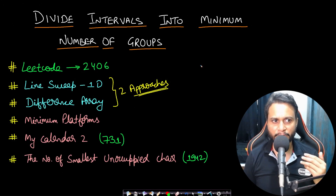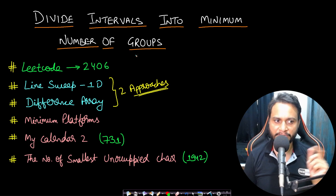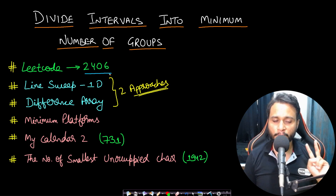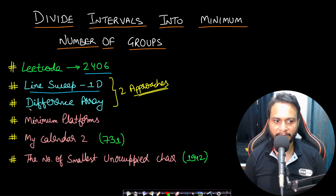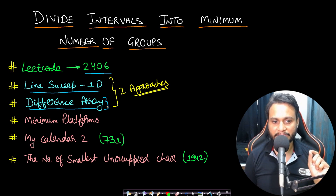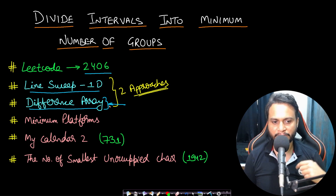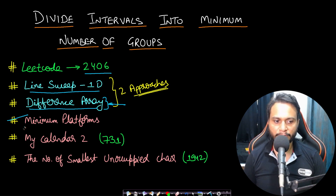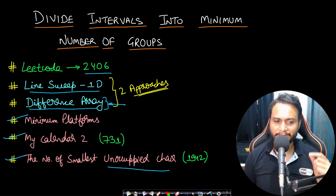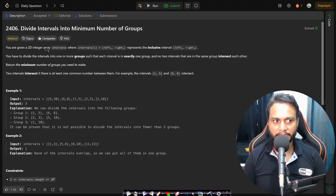Hello guys, welcome back to TakeDose. In this video we will see the 'Divide Intervals into Minimum Number of Groups' problem, which is LeetCode number 2406. We will see two optimal approaches: one based on line sweep 1D and the second one based on the difference array. The prerequisite for the difference array technique is to watch the video on difference arrays — the link will be in the description. This problem is similar to the minimum platforms problem, My Calendar 2, and the number of smallest unoccupied chair problem.